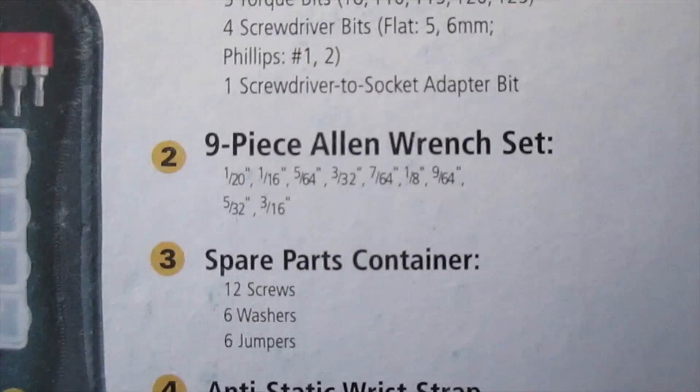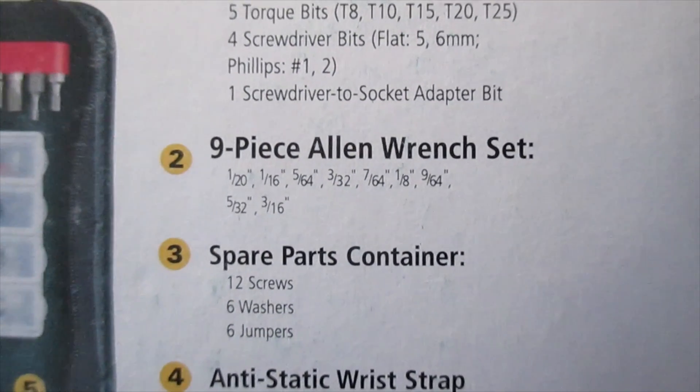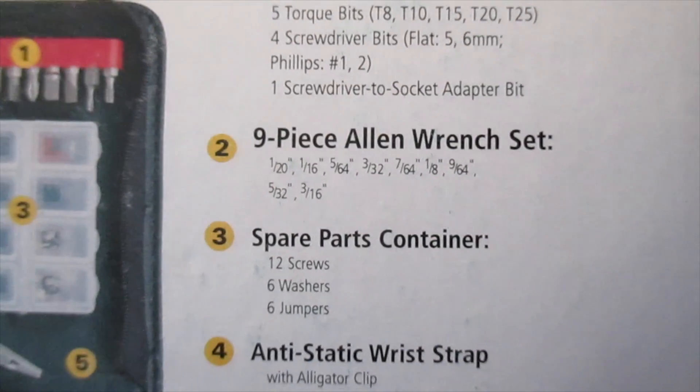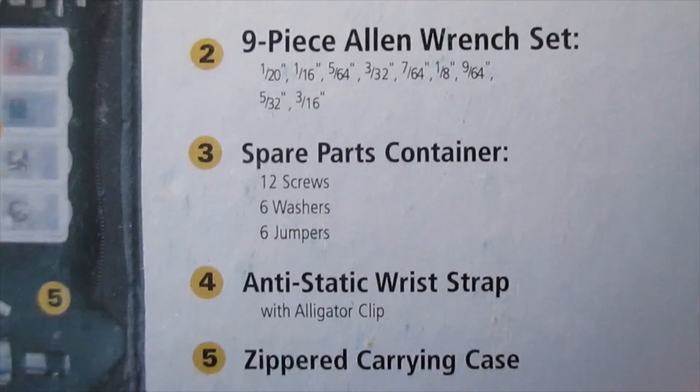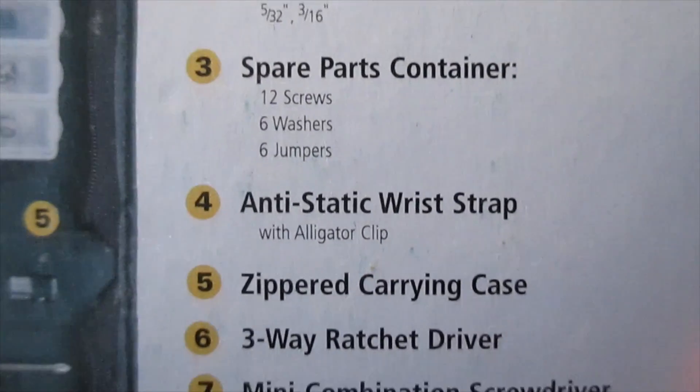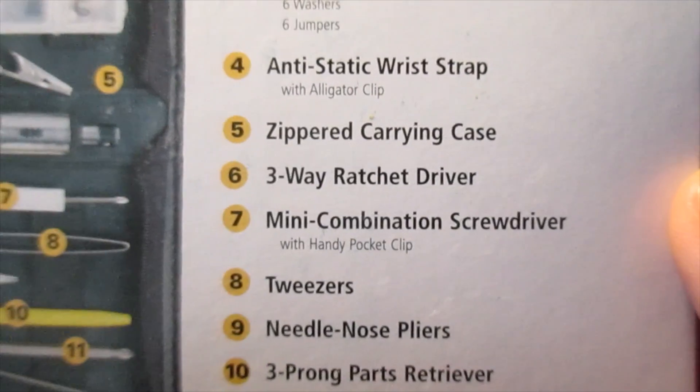Nine piece allen wrench set, I'm not going to read all those but you can pause it and look at those if you want. So there's those allen wrenches right there. There's spare parts containers, 12 screws, 6 washers and 6 jumpers. Anti-static wrist strap, zip carrying case which is this.